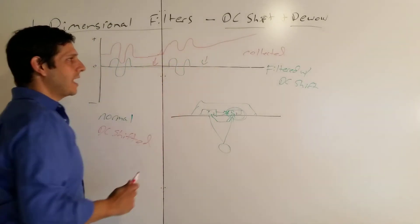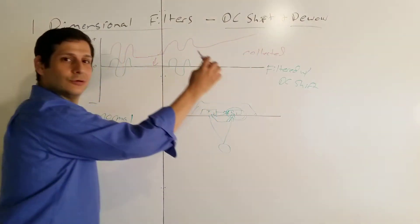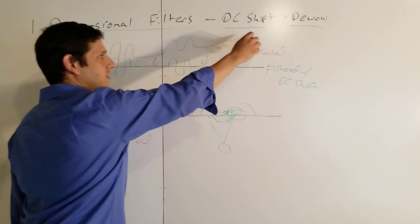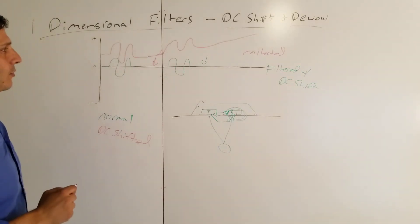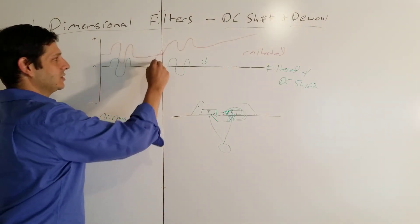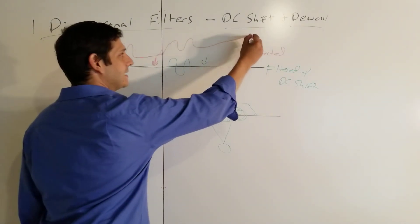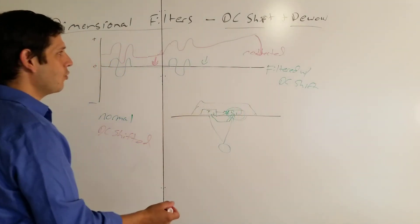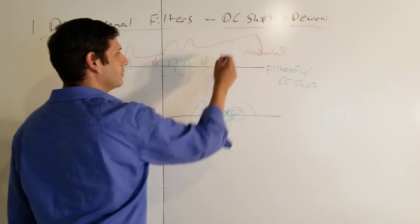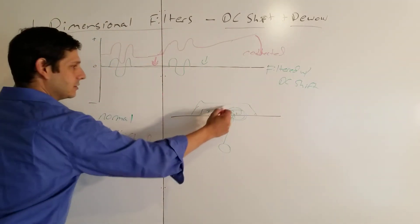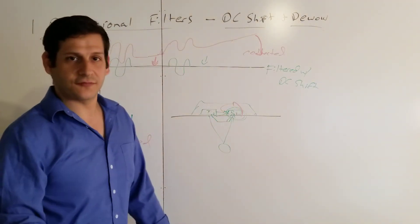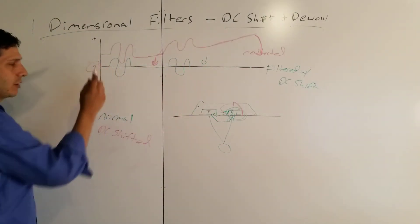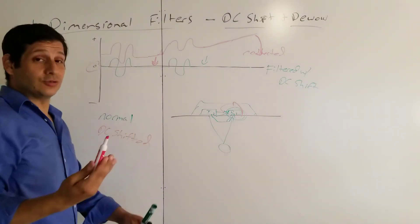Now you have a DC shifted and wowed trace. So you need to adjust the DC shift and adjust for the wow, and so you need to de-wow it. In order to do that, what happens is this has to come down this way, as well as this part has to be bent down, so your average actually becomes zero.